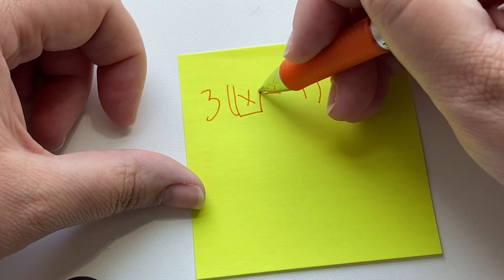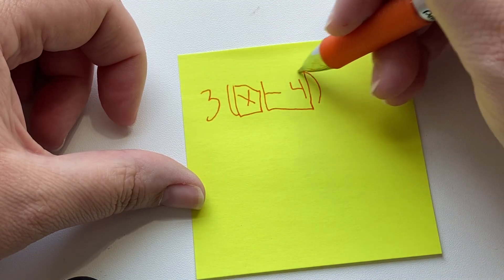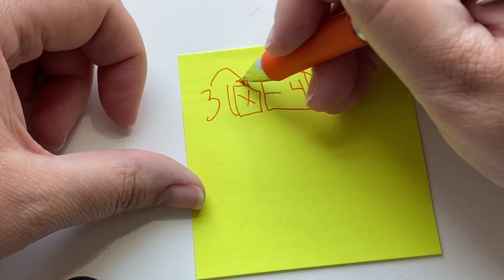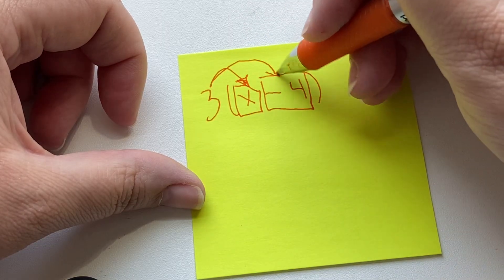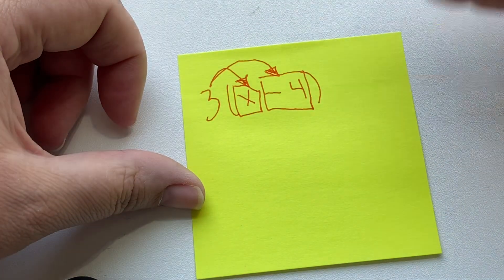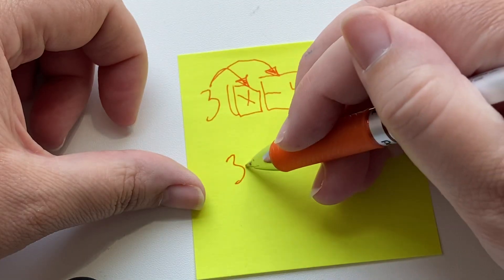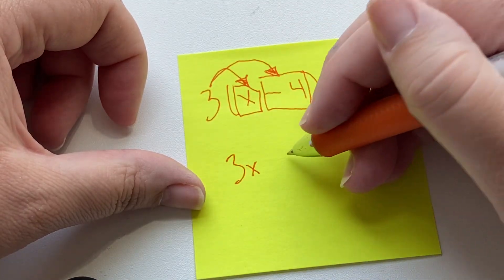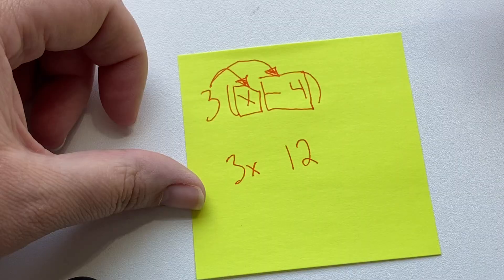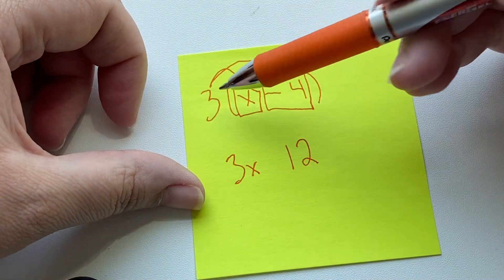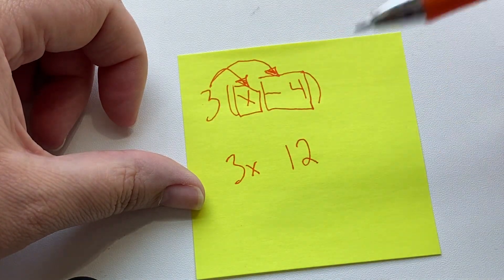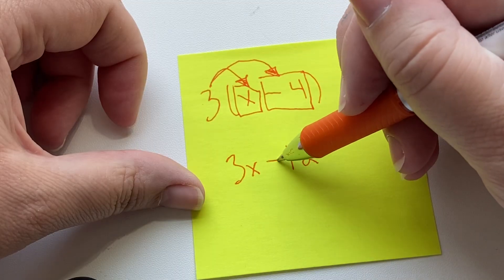We still have x, but this time we have negative 4. We do 3 times x, that's the same. We do 3 times negative 4. So, we know we'll get 3x, and we know 3 times 4 is 12. And then we have to remember, when you multiply a positive number times a negative number, the result will be negative.